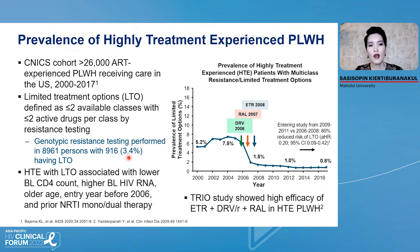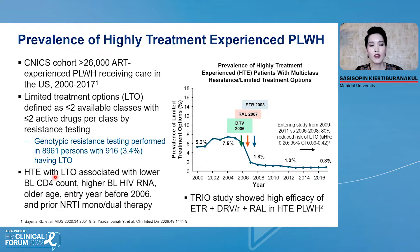This study showed that around 3.4% of patients have limited treatment options. However, the prevalence of patients with limited treatment options declined after 2006 when new and more potent drugs became available — such as etravirine, new classes like dolutegravir, and also newer NRTIs. Factors associated with being highly treatment-experienced with limited treatment options include lower baseline CD4 cell count, higher baseline HIV RNA, older age, treated before 2006, and prior NRTI mono or dual therapy.